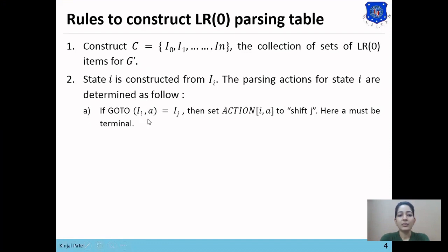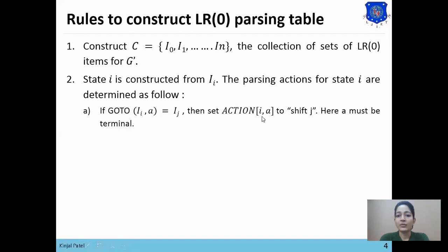For the shift entry: if goto(Ii, A) equals Ij, then set action[I, A] to shift J, where A must be a terminal symbol. For example, if I equals 0 and J equals 1, then goto(I0, A) equals I1, so shift J becomes S1 — set S1 entry from state 0 on symbol A.